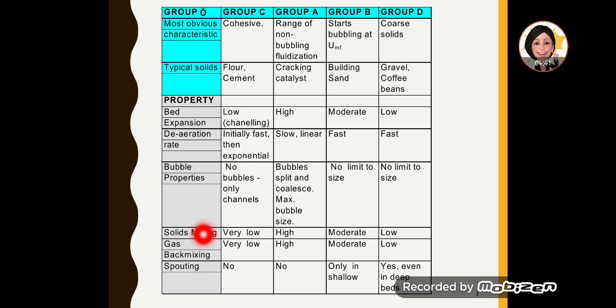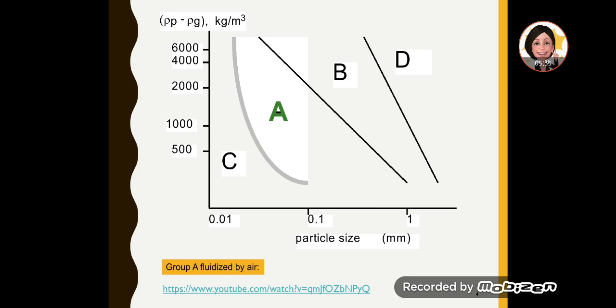Spouting is what we saw in the first lecture for poor fluidization, where only one part of the particles were fluidized. That is called spouting. The rest of the bed was not moving, but only one part was moving. Usually group C and group A do not give spouting; it's much easier to fluidize group A. Group B can give you spouting even in deep beds because the particles are coarse, so spouting can easily happen.